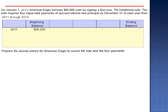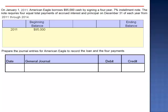The beginning balance of this loan is $95,000. The journal entry to record this loan is a debit to cash, $95,000, and a credit to notes payable.